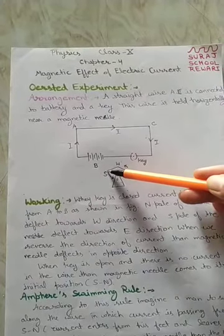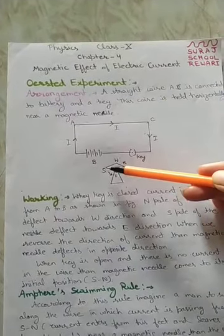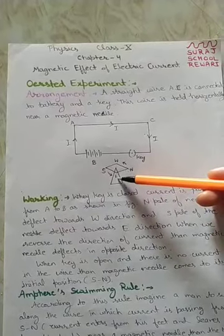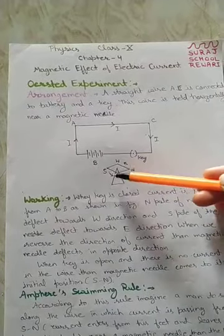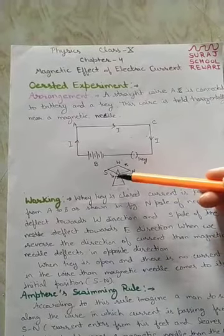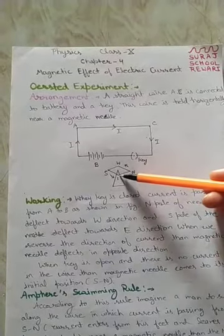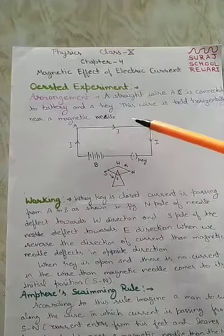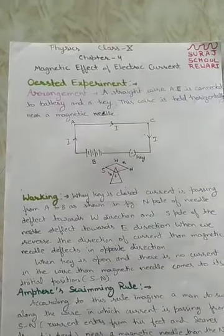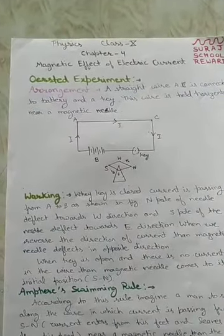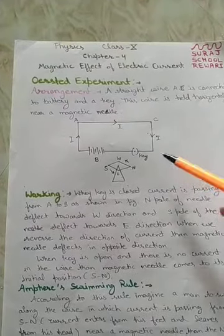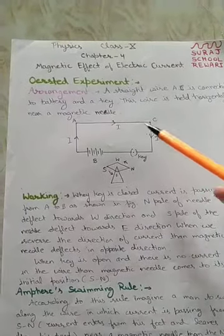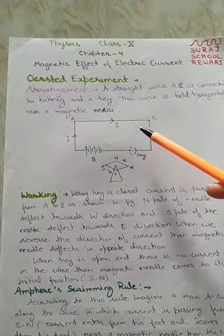And the south pole of the needle will deflect towards the east direction. The deflection of the magnetic needle shows that here a magnetic field is present. The main conclusion of this experiment is that a current carrying conductor always produces a magnetic field when current passes through it.